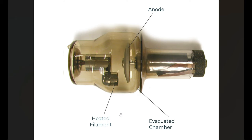The first thing I want to do is start by showing you what an x-ray tube looks like. The components that we're going to be talking about with our x-ray tube, in particular with KV and mAs, are going to be our filament, which we see here, the anode, which rotates around an axle or spindle here, and the evacuated chamber, which is where x-ray production will take place.